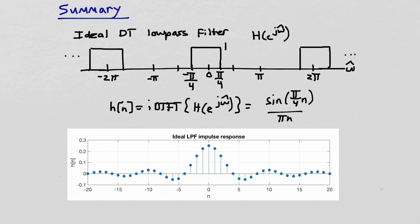To summarize, we've shown that the ideal discrete-time low-pass filter with this frequency response has an impulse response that's equal to sin(π/4·n) over πn. And that impulse response looks like this picture, with the caveat that this extends infinitely to the left and infinitely to the right. So that's what we've shown that we can do just by taking the inverse discrete-time Fourier transform of the frequency response to get the impulse response.